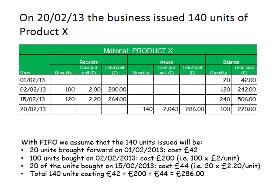We record the quantity being issued of 140 units, the total cost of £286, and we can calculate the cost per unit: £286 divided by 140 units gives approximately £2.043 per unit. Lastly, we calculate the balance. We had 240 units before this transaction and sold or issued 140, leaving 100 units. In terms of cost, we had £506 before this transaction; deducting the £286 associated with the 140 units issued, we're left with a cost of £220.